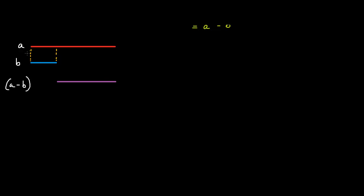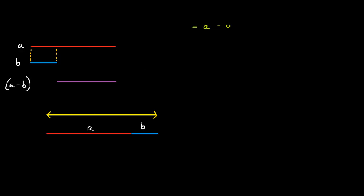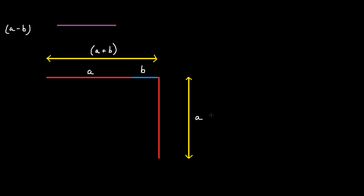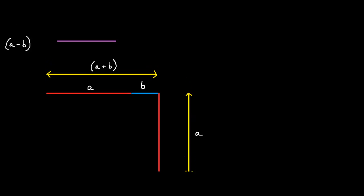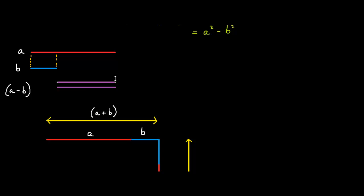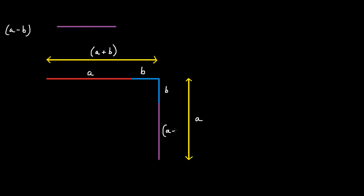Now that we've got this information, let's create a rectangle. The horizontal length of this rectangle will be a plus b. The vertical length of this rectangle will be just a. But a will be made up of b and a minus b. Now that we've got the horizontal and vertical lengths of this rectangle, let's finish drawing it.